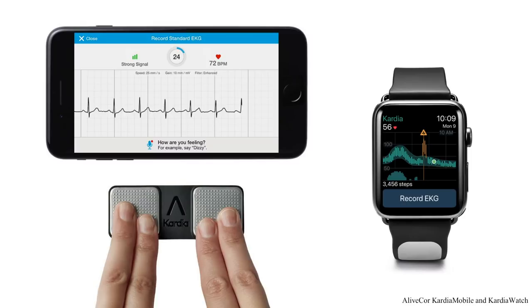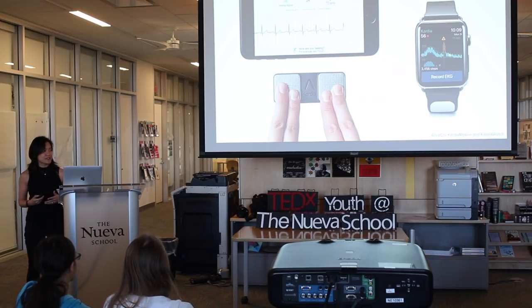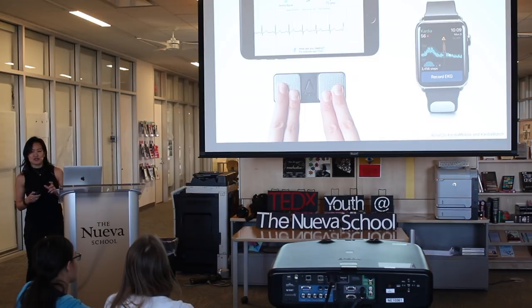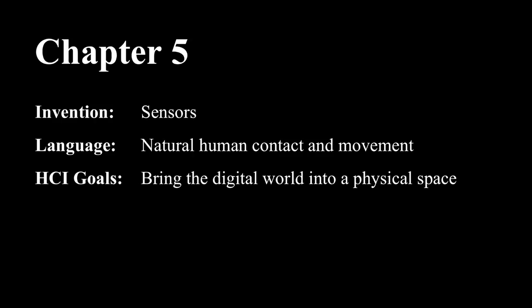AliveCore offers a mobile FDA-cleared EKG monitor targeted towards patients who have atrial fibrillation. AFib patients have an irregular and often rapid heart rate that can increase their risk of stroke, heart failure, or other heart-related complications. AliveCore offers two ways to monitor the heart: Cardio Mobile, which is an attachment to your phone, and Cardio Watch, a replacement wristband for your Apple Watch. A notification is sent to the user to record an EKG if the heart rate appears inconsistent with activity level. Theoretically, AliveCore could mine all the cloud data to predict if your EKG mimics patterns seen in other patients hours before a heart attack, and alert you to take necessary precautions.